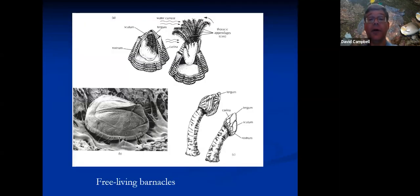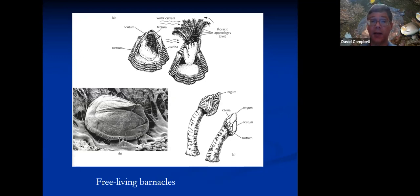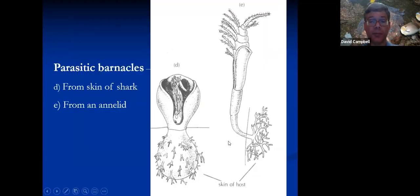Barnacles are a very different looking type of crustacean, but inside that outer skeleton of the barnacle is a little shrimp-like creature. A baby barnacle looks not that different from some other types of little crustaceans. But when it's ready to grow up, it finds a suitable spot, glues itself down by its head, and spends the rest of its life kicking its feet up in the water to capture food. There are also some rather bizarre parasitic barnacles — some of them don't look much like animals, much less like any sort of arthropod.